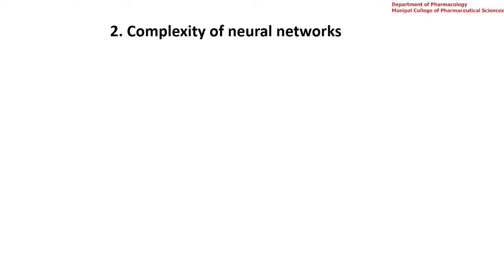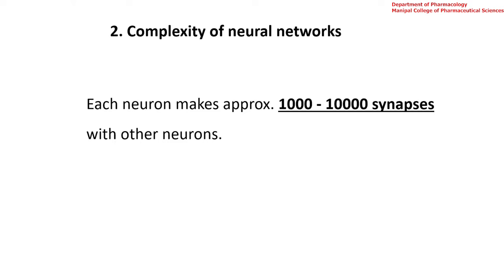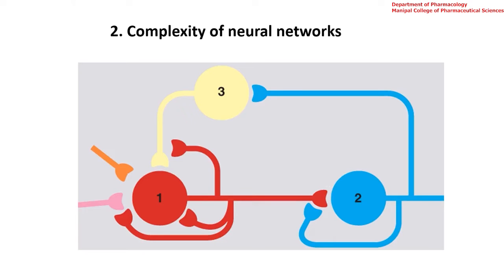The second reason is the complexity of the neural network. Each neuron makes approximately 1,000 to 10,000 synapses with other neurons. With over a billion neurons, the number of connections is going to be enormous. Here is a picture depicting a neuronal connection — this is a simplified picture, but the actual reality is much more complex.